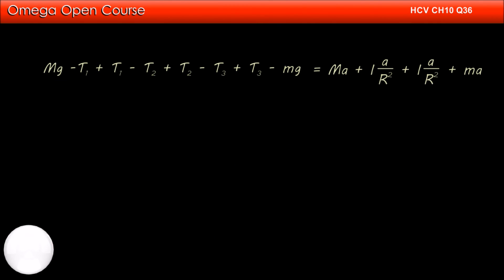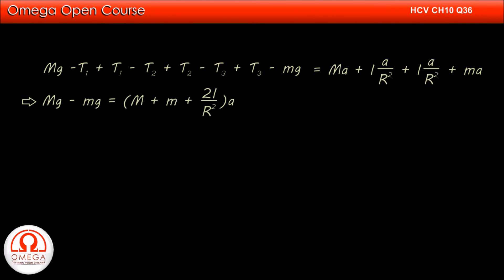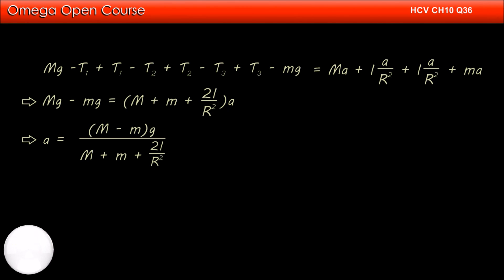Adding all these equations, we get Mg minus T1 plus T1 minus T2 plus T2 minus T3 plus T3 minus mg equals Ma plus (I/r²)a plus (I/r²)a. Simplifying, we get capital M minus m into g is equal to capital M plus m plus 2I divided by r squared, into a. This implies a is equal to (M minus m)g divided by (M plus m plus 2I divided by r squared). This is our answer.